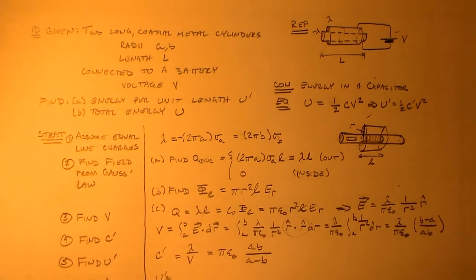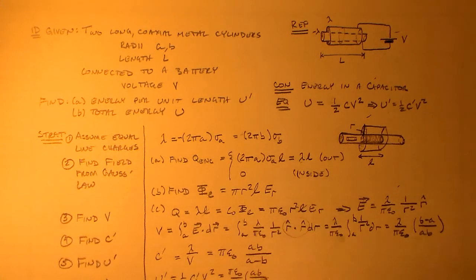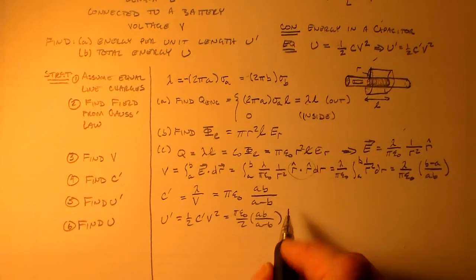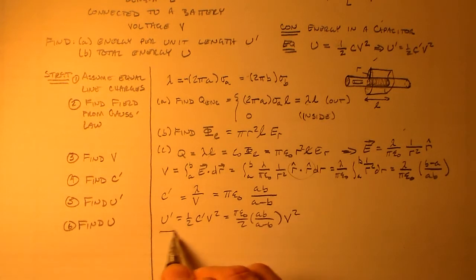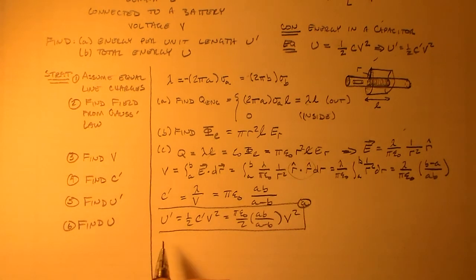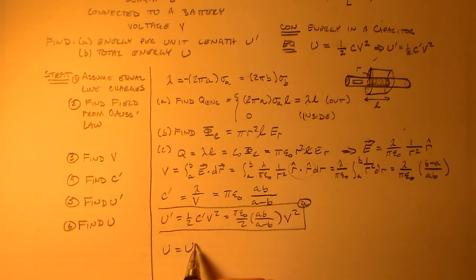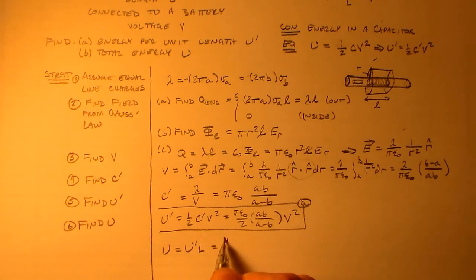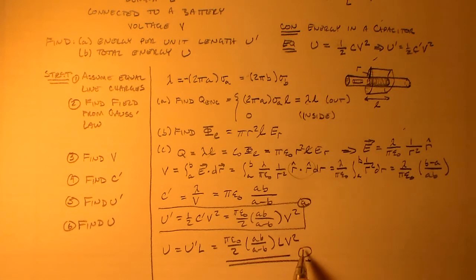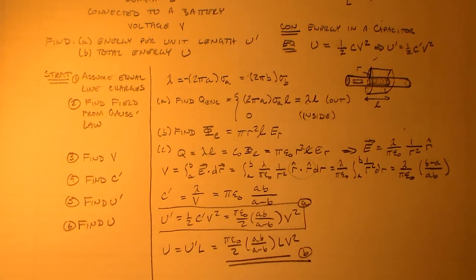U prime, we said, was equal to one-half C prime V squared, which means we have pi epsilon naught over 2 AB over A minus B. Oops, excuse me. AB over A minus B times V squared. So that's for part A, right? And so for part B, we have U is equal to U prime L, which is just equal to pi epsilon naught over 2. AB A minus B times L V squared. So that's for B. Nothing to it.